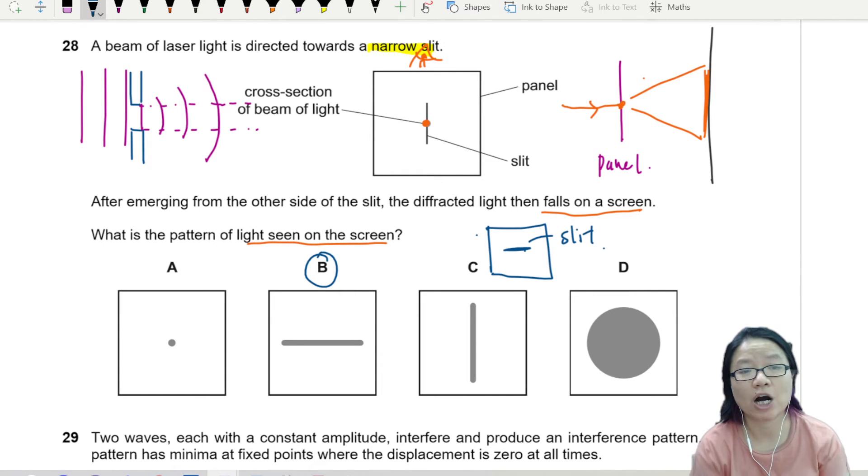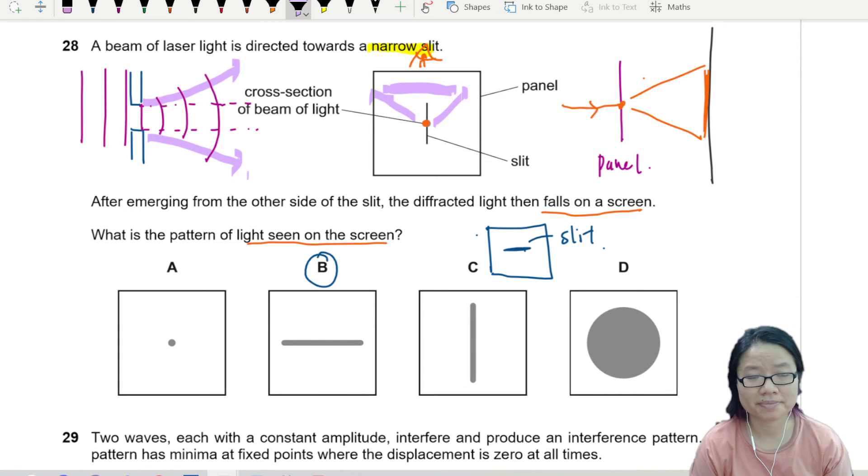We always travel away from the gap. So in this case, the gap is vertical, so we travel away from the gap, so it becomes horizontal. If in this case, it travels away from the gap, so it becomes vertical. So you need to visualize this a bit.